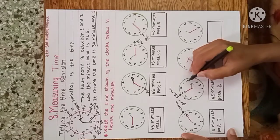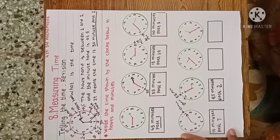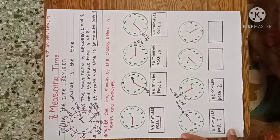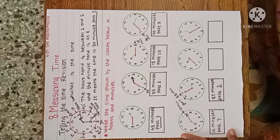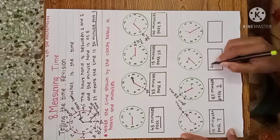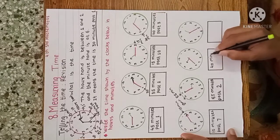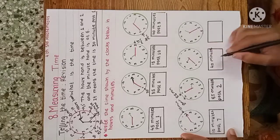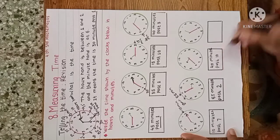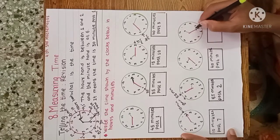Next: the hour hand is in between 10 and 11, and the minute hand is on eight. Eight means 40 minutes, therefore the time is 40 minutes past 10.